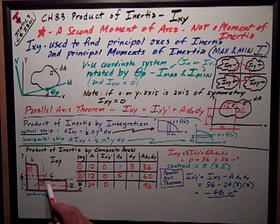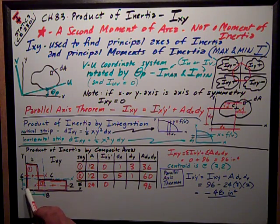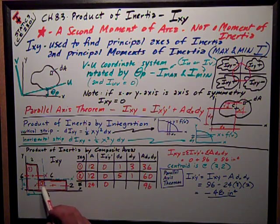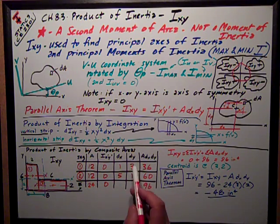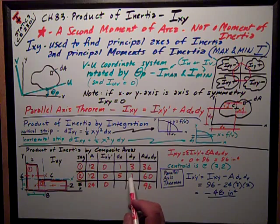For area two, segment two, the DX distance is this distance from the centroid, which is two inches plus half the width of six, so three inches, so it's five inches. DY is this distance, vertical distance to the X axis from its centroid, one.